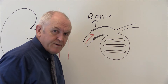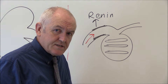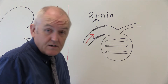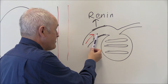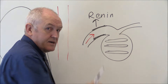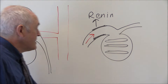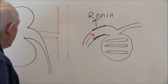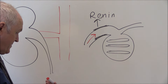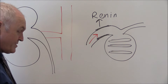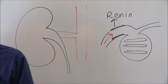As blood pressure drops, more renin will be released, and conversely if the pressure of the blood in the afferent arteriole is good, less renin will be produced. The aim is to maintain the flow of blood to the kidney. So how is this renin regulating the blood flow to the kidney?